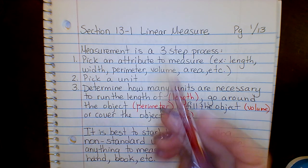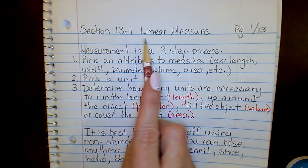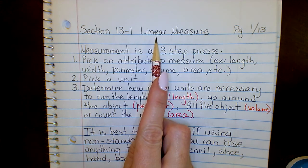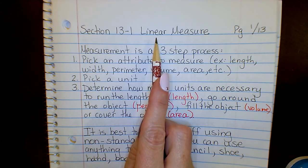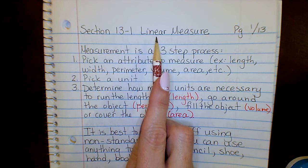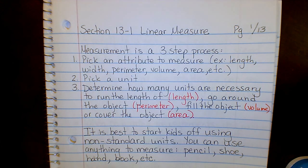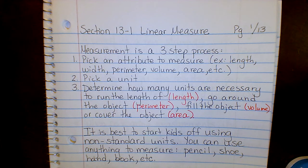We start with linear measure. As the name implies, this is measurement in one direction — one-dimensional measurement, so line, linear. Measurement itself is a three-step process. First, you pick an attribute to measure: do you want to measure the length, the width, the perimeter, the volume, the area, the surface area?